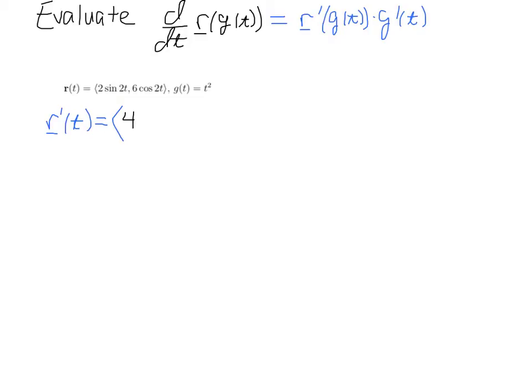So as I said, we'll have 4 cosine of 2t and then for the same reason, we'll get minus 12 sine of 2t. And there I employed component-wise differentiation and a chain rule in each case.